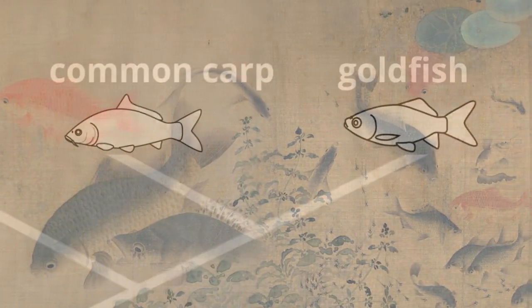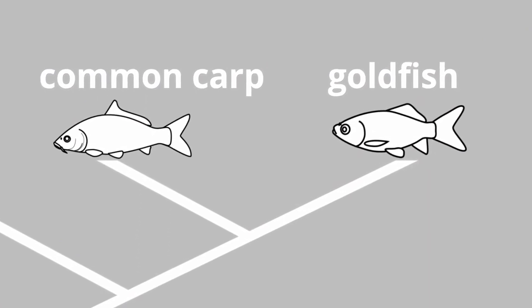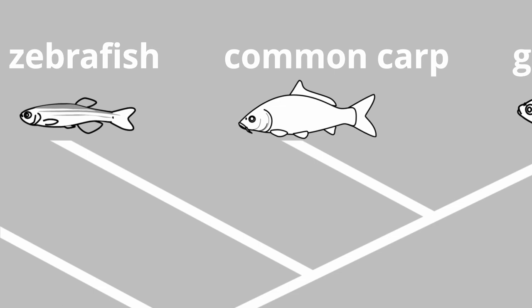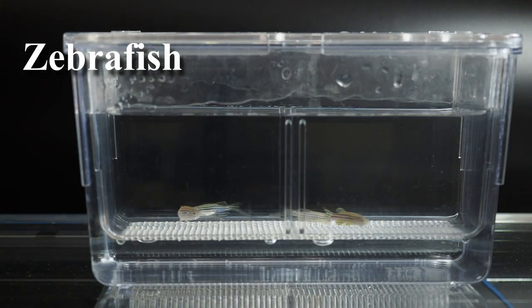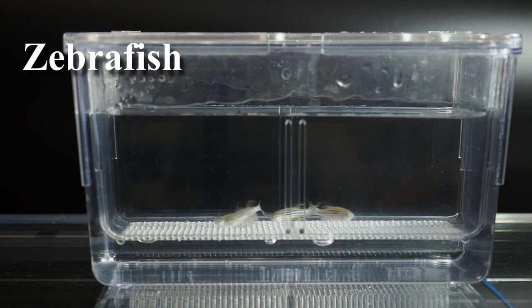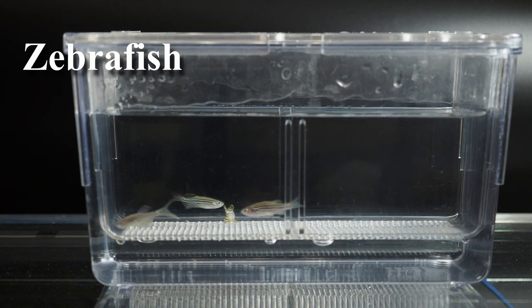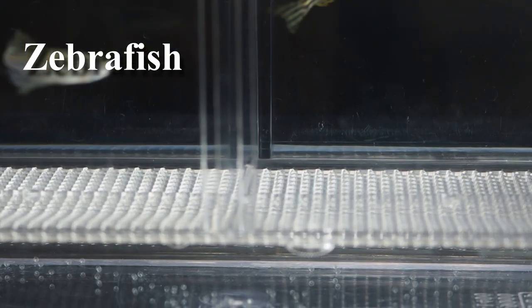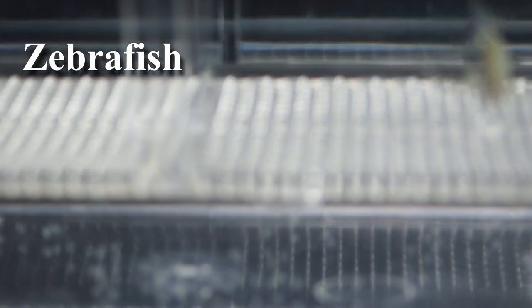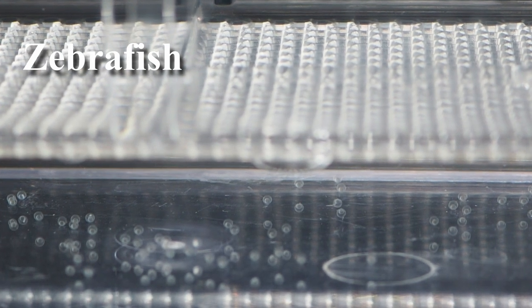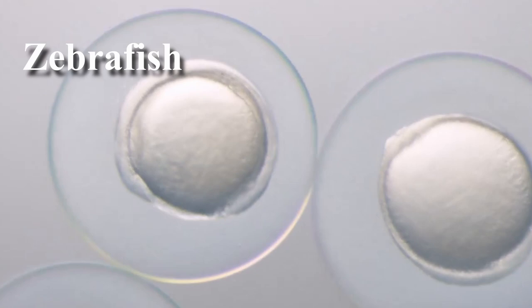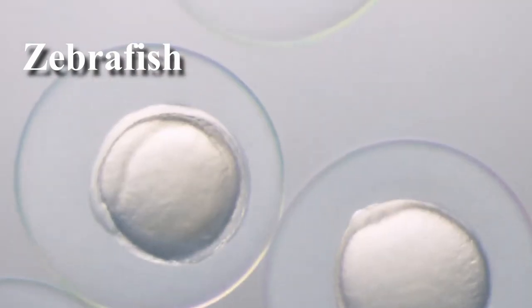Goldfish and common carp have a similar history as domesticated animals and share similar characteristics useful to researchers. The zebrafish is also frequently used as a model organism in experimental biology because it is easy to breed and maintain in aquarium conditions. Its small size and short life cycle make it ideal for molecular developmental genetic studies, and as a result, zebrafish have become an important animal for studying molecular developmental mechanisms.